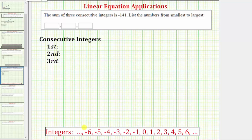A list of consecutive integers is given here below. Notice how, as we list the integers from left to right, they increase by one each time. Negative six plus one equals negative five. Negative five plus one is negative four. Negative four plus one is negative three, and so on.